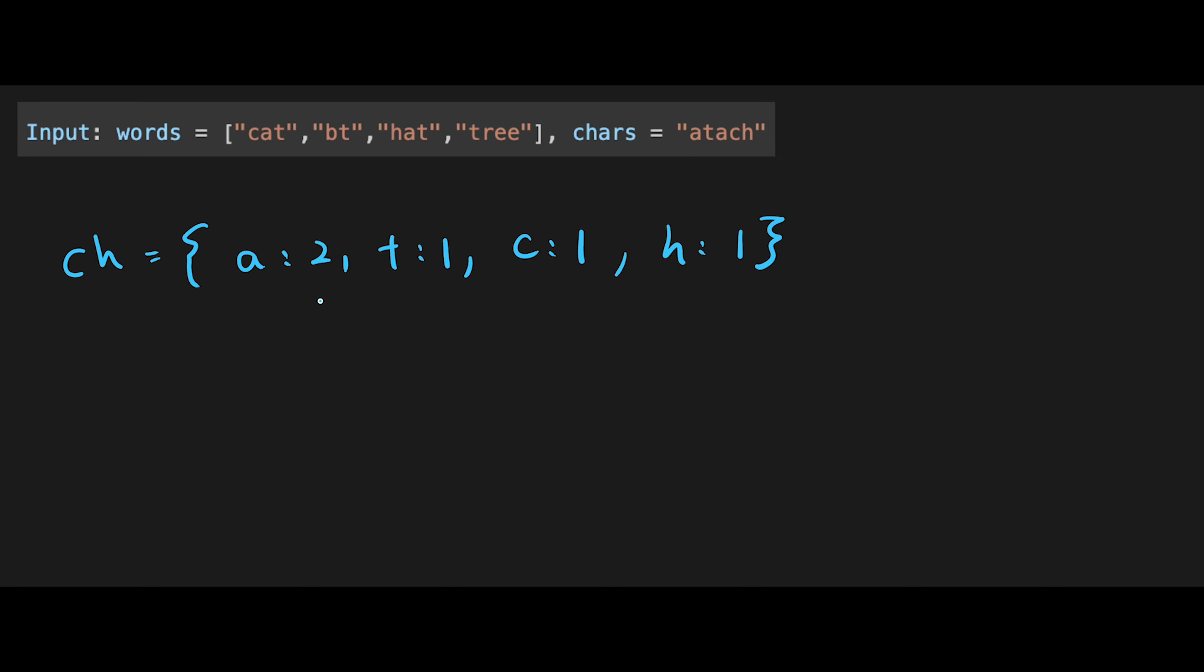So that's why before we try to find the same character, we need to copy this ch. So let's say copy: a is 2 and t is 1 and c is 1 and h is 1. And then every time we find the same character, we update this copy hash map. When we start a new word, just copy this ch to this copy variable so that we can reset it to 2, 1, 1, 1.